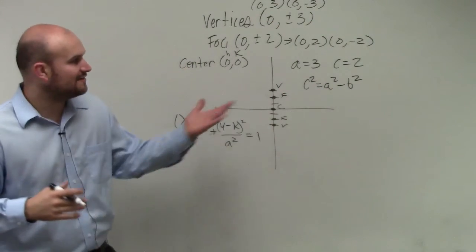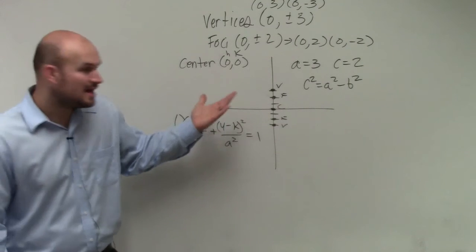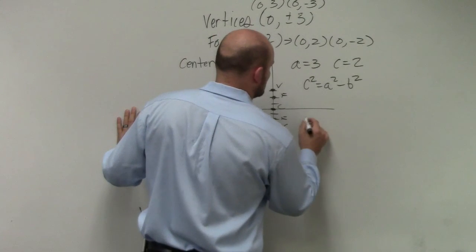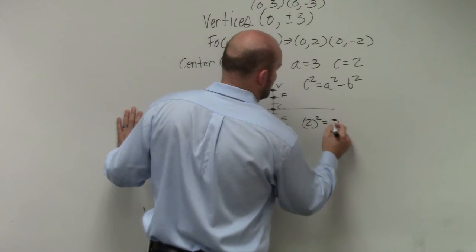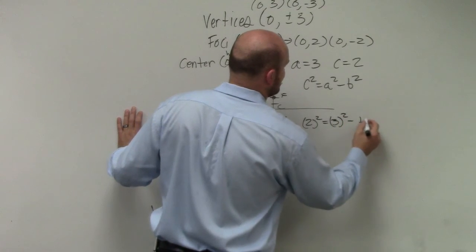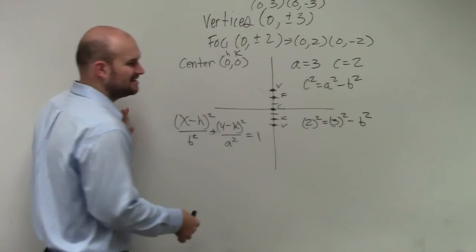If I have two of those, can I figure out the third? Yeah, of course I can. So I have 2 squared equals 3 squared minus b squared. And now I just need to solve.